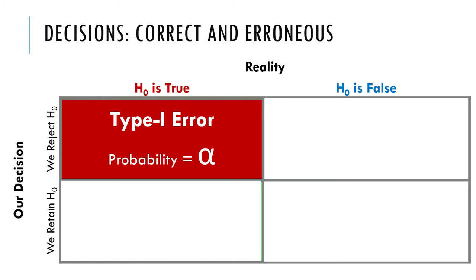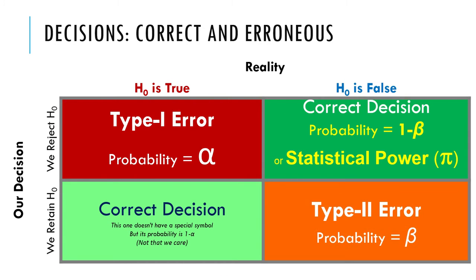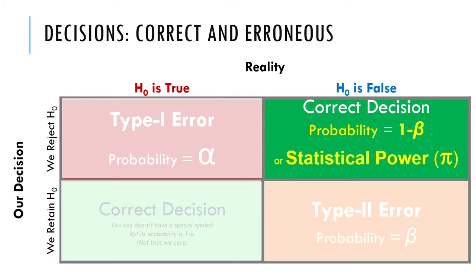The probability of a Type 1 error is alpha. What we're really interested in is the correct decision of rejecting a null hypothesis when the null hypothesis is false — rejecting a false null hypothesis. That's a good decision. It's called statistical power. The probability of that happening is called statistical power, sometimes written as 1 minus beta, because beta is the probability of a Type 2 error. Sometimes people use the lowercase pi because it stands for power.